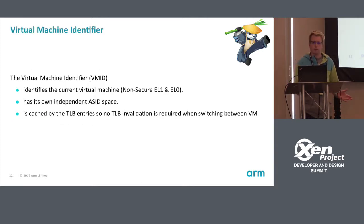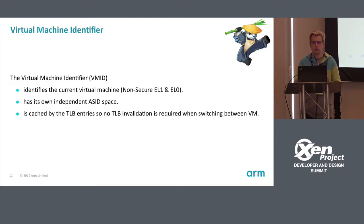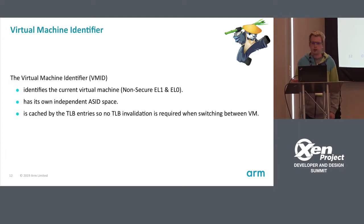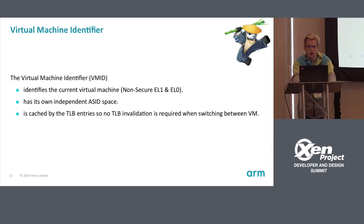The VMID — Virtual Machine Identifier — is very similar to the ASID. It identifies the current virtual machine, specifically the non-secure EL1/EL0 context. Every VMID has its own address space, similar to ASIDs, and entries are cached by the TLB. So you don't need to do a TLB flush when switching VMs.